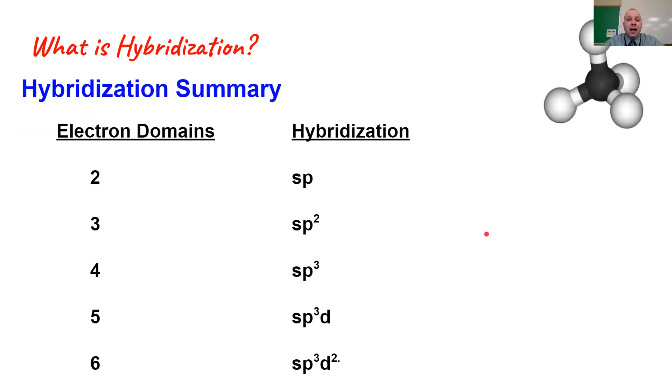Kind of over-simplifying this, if we take a look at this summary page, the hybridization that a molecule experiences is based on the number of electron domains. So to be clear, not bonding domains but electron domains. If we have two electron domains, we put into the blender one s orbital and one p orbital and we get out sp. If we have three electron domains, we put in one s and two p and we get out sp2.